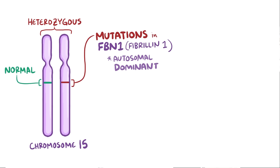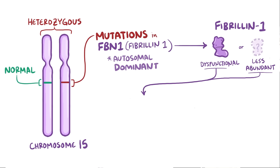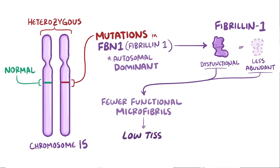The FBN1 gene encodes fibrillin 1 protein, one of three fibrillin subtypes. In Marfan syndrome, fibrillin 1 is either dysfunctional or less abundant. As a result, there are fewer functioning microfibrils in the extracellular matrix, and that means there's less tissue integrity and elasticity.